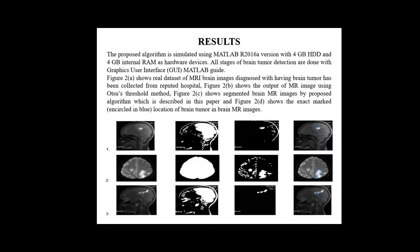The proposed algorithm is simulated using MATLAB. Column 1 shows the real dataset as input. Column 2 shows the output using Otsu's threshold method. Column 3 shows segmented brain MR images by the proposed algorithm. Column 4 shows the exact marked location of the tumor, which is encircled in blue color.